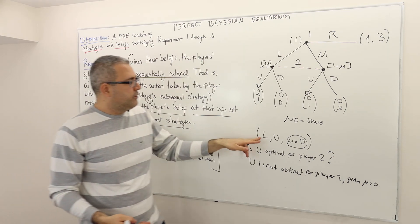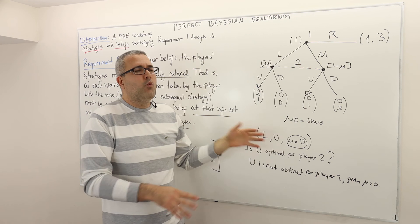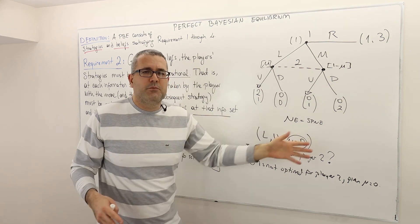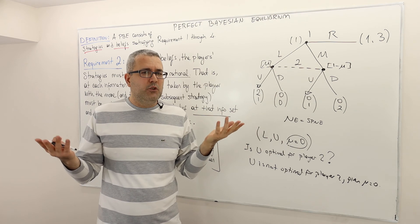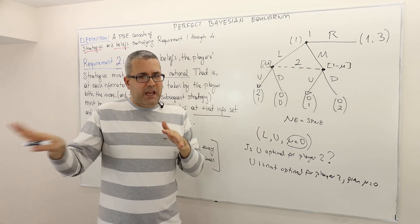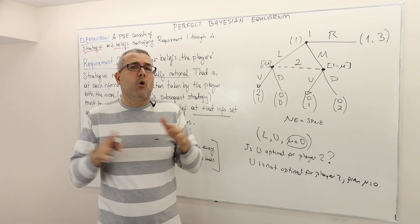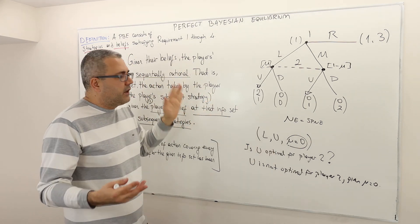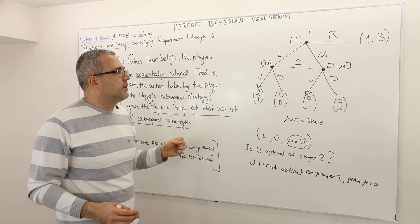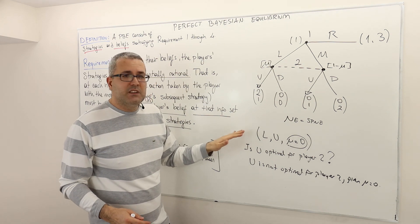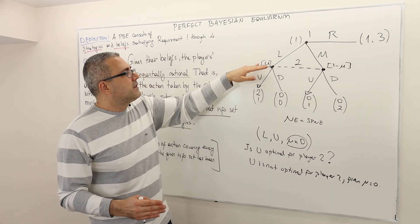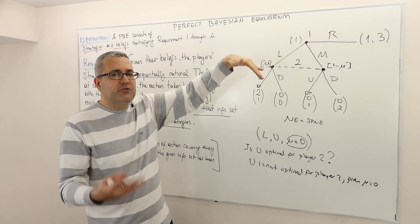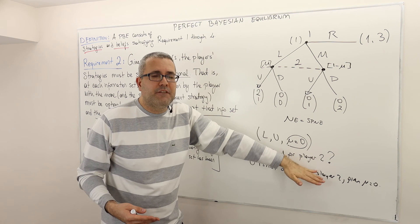Do we satisfy requirement two? Do I need to look at player one's strategy? No — if one player fails to satisfy requirement two, you don't need to look at the other players, because that means this strategy profile cannot be a perfect Bayesian equilibrium. Requirements one, two, three, and four must all be satisfied for all players. Here, requirement two doesn't hold for player two, so this cannot be a perfect Bayesian equilibrium. Sequential rationality doesn't look at what players played before — what you should be best responding to is your belief and what's going to happen afterwards.